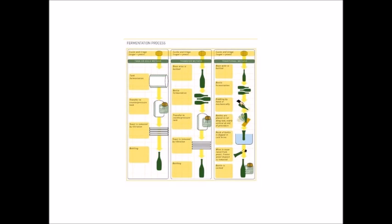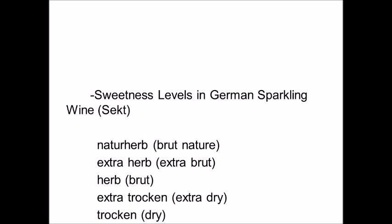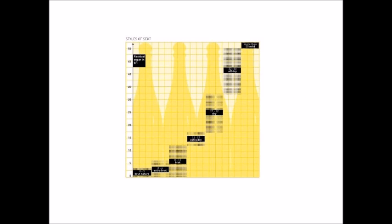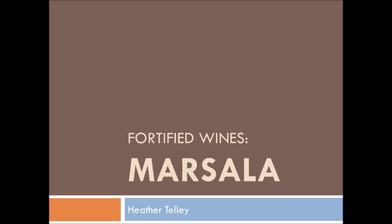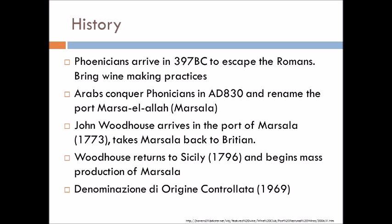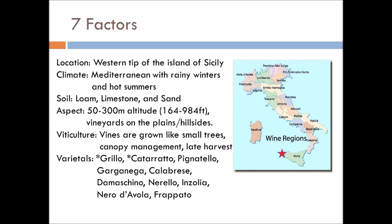Vinification for Bordeaux: normal winemaking practices; chapitalization is permitted and fairly common; wines are blended between pressing and bottling — almost no varietal wines; fermented in stainless steel or oak barriques; aging may be done; 90% of wines are red. Varietals — red: Cabernet Sauvignon dominates left bank at 25%; Merlot 62% dominates right bank; Cab Franc 12%; Petit Verdot, Malbec, and Carménère make up 1%. White: Sauvignon Blanc 36%, Sémillon 54%, Muscadelle 7%.